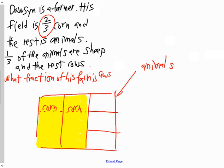So let's go back for just a second. Let me ask you the question: what fraction is animals of the field? One-third. And of that one-third, how many are cows? Two-thirds of one-third. Do you agree?